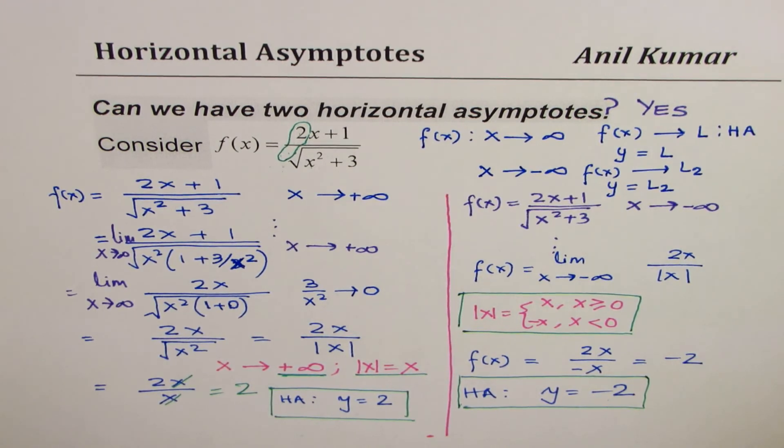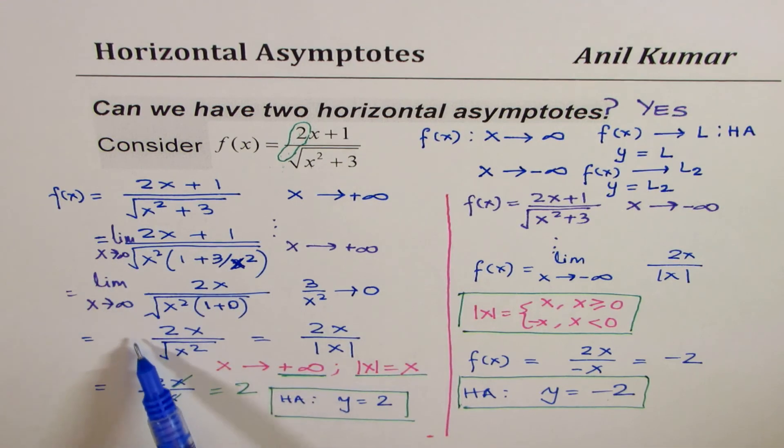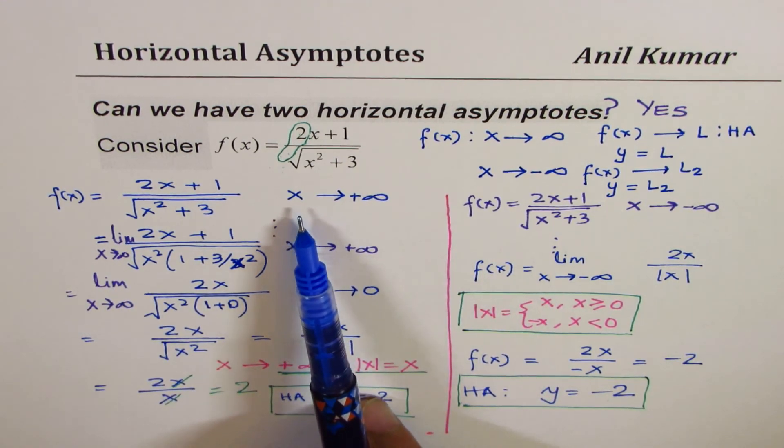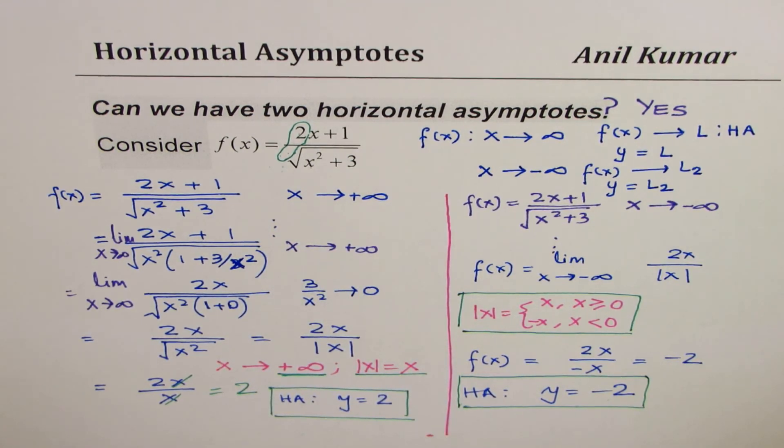I hope this explanation works for both students who are either taking functions or calculus. If you're doing calculus, you can use limits and all this. If not, you can use the convention that if x is approaching a large value, positive or negative, what happens. Feel free to share your views and comments. I'll appreciate if you like and subscribe to my videos. Thank you and all the best.